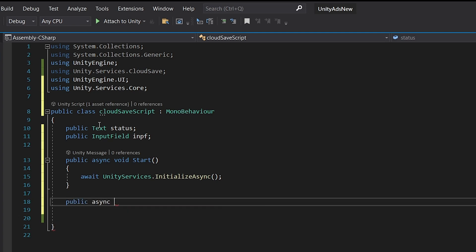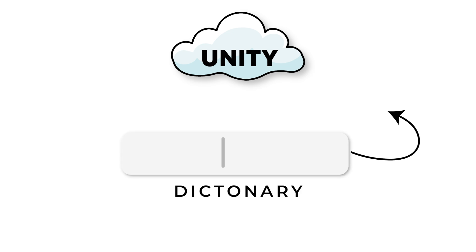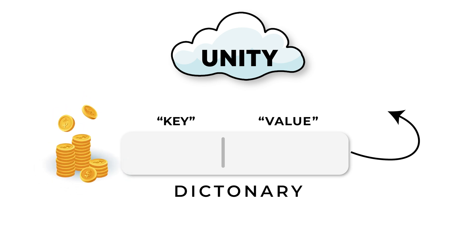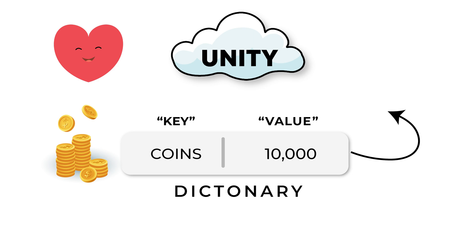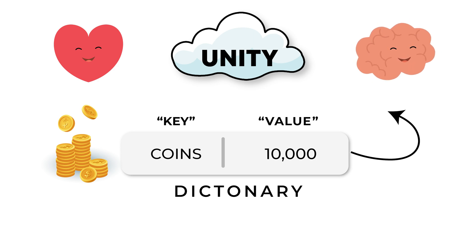Before moving further, we should know that we can only store dictionaries into the Unity server, where one side is a key and the other side is a value. For example, to store a player's total coins, create a key named 'coins' and pass in 10, 20,000, or whatever amount the player currently has. We do the same for all data — player health, player experience — everything needs a key-value pair.